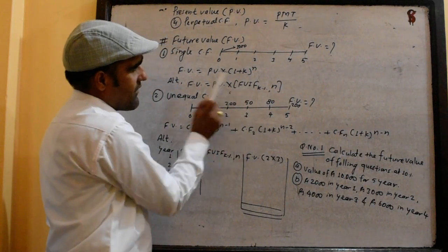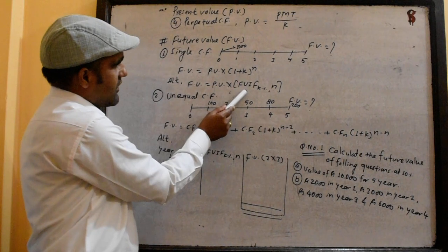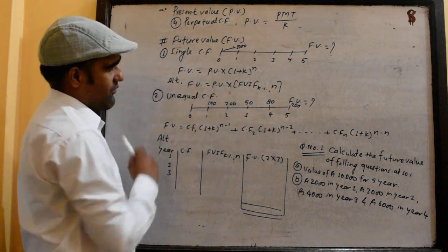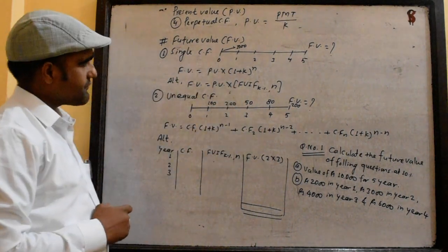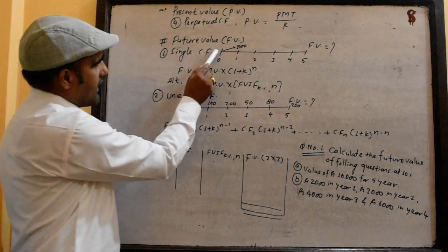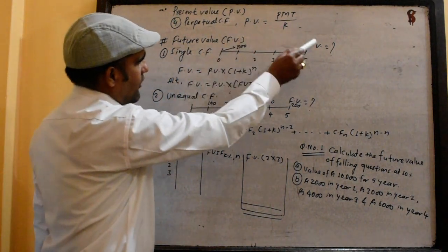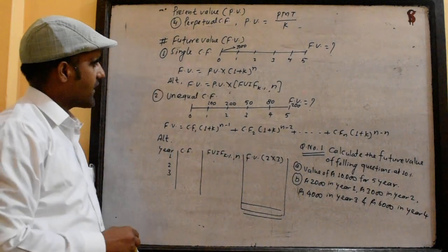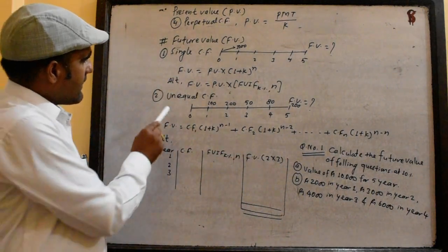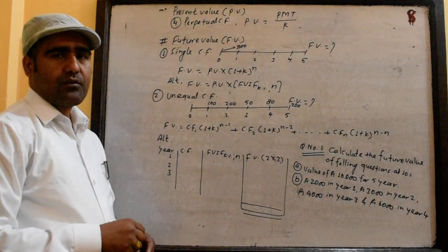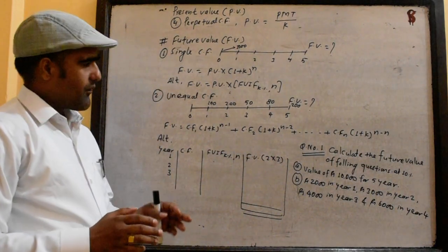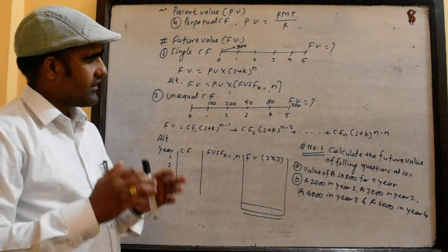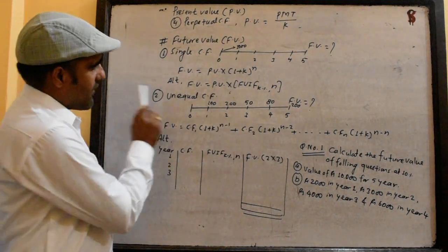So, FV equals to the table. For the cash flow of the cash flow, it is a single cash flow. So, the cash flow is less than 5 times. The cash flow is less than 5 times. I will explain a few words for instance.